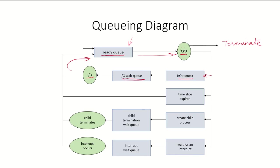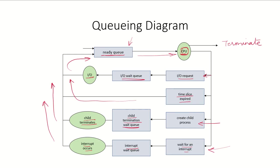There is also the possibility that a process was using the CPU and its allotted time has expired, so the CPU is taken from that process and it goes back to the end of the ready queue. A third possibility is that the process has created a child process and is waiting for the child to terminate — once the child terminates, it goes back to the ready queue. Finally, a process running on the CPU may be waiting for some interrupt; it goes to the interrupt wait queue and, once the interrupt occurs, returns to the ready queue.